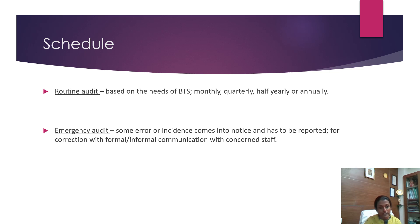The scheduling of an audit can be either routine or emergency. In a routine audit it is based on the needs of the blood transfusion service and is done monthly, quarterly, half-yearly, or annually. An emergency audit is done when some error or incident comes to notice and has to be reported for correction with formal or informal communication with the concerned staff.